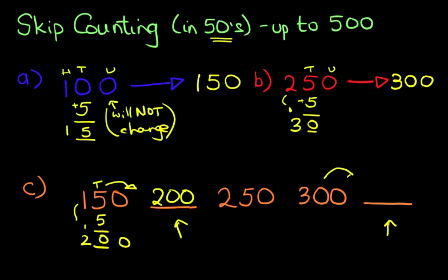After 300, now we're working on the second blank number. Again, the units does not change. We go straight to the tens. Add 5, that becomes 5. Nothing else changes. 350.